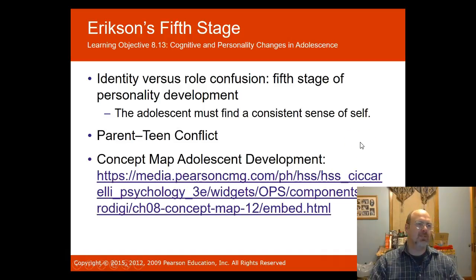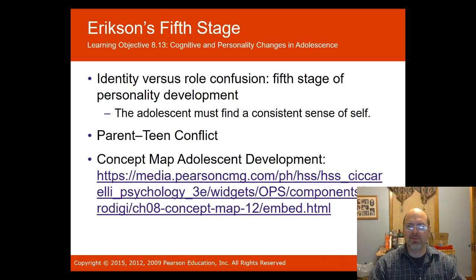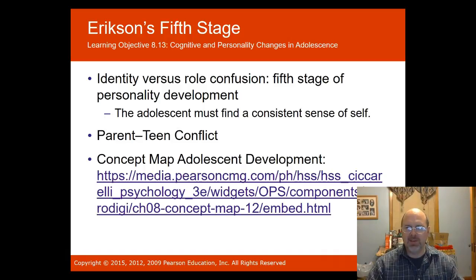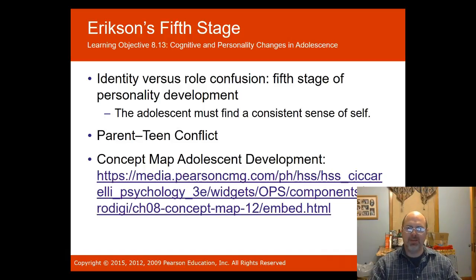Erikson's fifth stage is identity versus role confusion, where the adolescent must find a consistent sense of self. This is where parent-teen conflict often arises. Peers who have resolved the first four stages are better equipped to resist peer pressure, since peer pressure is most effective on those who desperately want to fit in. Bangston in 1970 noted that some rebellion is necessary in breaking away from childhood dependence and becoming a self-sufficient adult.